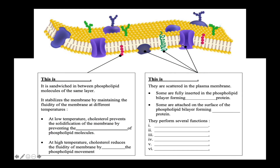These are the proteins. As we have learned from our discussion of the fluid mosaic model, various proteins are scattered in the plasma membrane, forming a mosaic. Some proteins are fully inserted in the phospholipid bilayer, forming integral proteins. But take a look at this one — it is attached on the surface of the phospholipid bilayer, so we call it a peripheral protein.